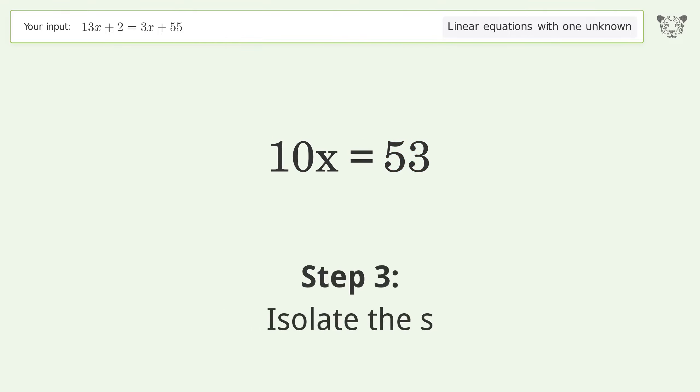Isolate the x. Divide both sides by 10. Simplify the fraction. And so the final result is x equals 53 over 10.